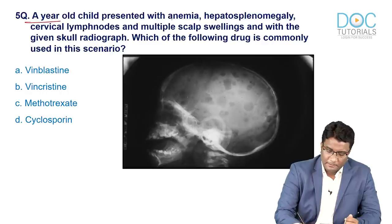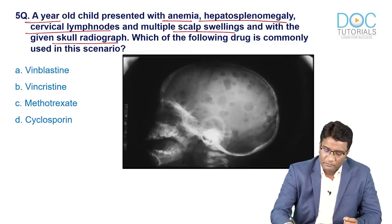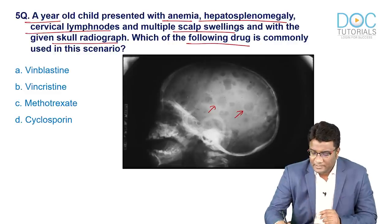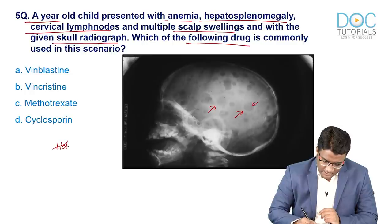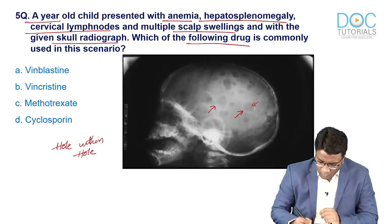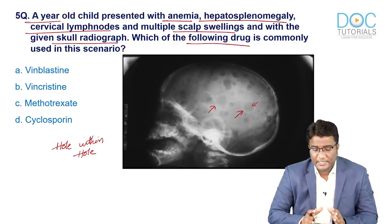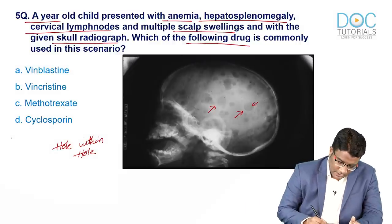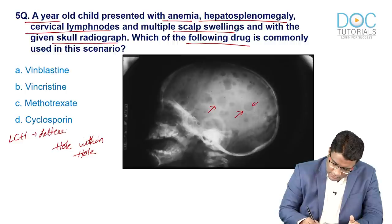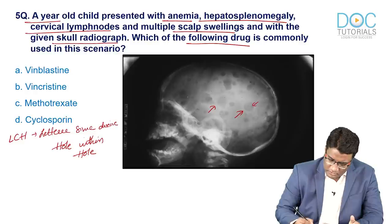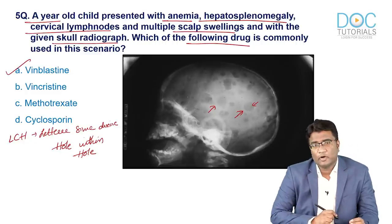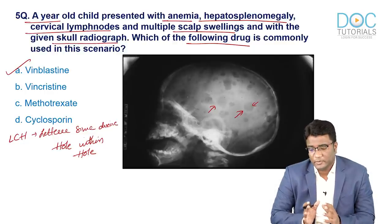Next question: a 1-year-old child presents with anemia, hepatosplenomegaly, cervical lymphadenopathy, and multiple scalp swellings. The skull radiograph shows multiple lytic lesions with beveled edges and a hole-within-hole appearance. This clinical picture — along with the radiograph findings — is in favor of Langerhans cell histiocytosis (Letterer-Siwe disease). The treatment consists of vinblastine and steroids.